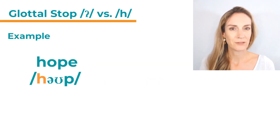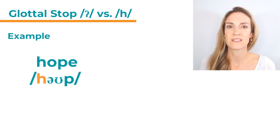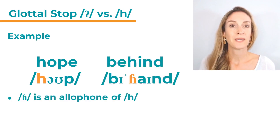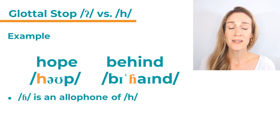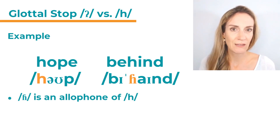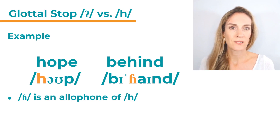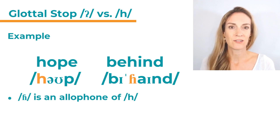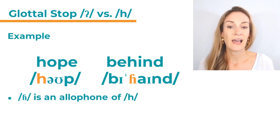Here's an example for the sound h — the word 'hope.' You can hear it's very soft, not harsh or anything: 'hope.' Now in the word 'behind' we also have an h sound, but you can see there's a different symbol used. Usually you'll see the normal h symbol, but if you write a very narrow transcription — exactly what somebody said — you might use this symbol instead, which is the same as h but with a little tail on top. This is an allophone of h.